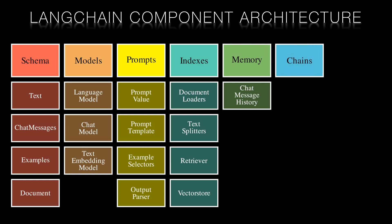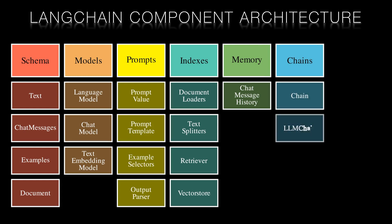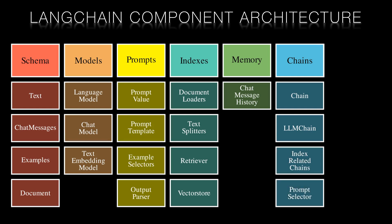Chains are end-to-end wrappers that combine various components to accomplish a common use case. They include chain, large language model chain, index-related chains, and a prompt selector. They are crucial for managing complex interactions, operations, and workflows, orchestrating the interaction between models, prompts, indices, and memory.